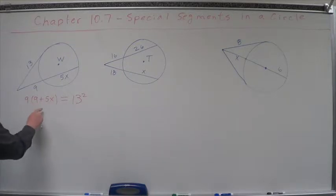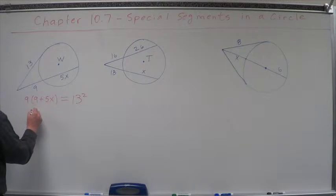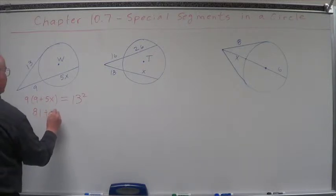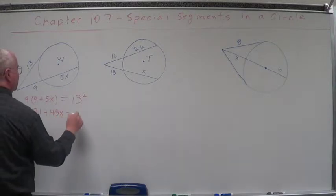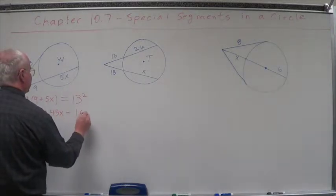So this right here, let's distribute. 9 times 9 is 81, 9 times 5x plus 45x equals 13 squared is 169.